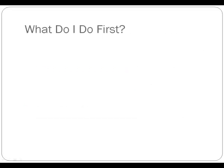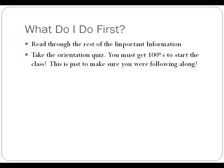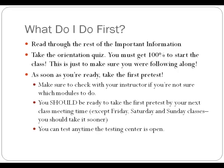So where do you go from here? The first thing is you're going to read through the rest of the important information — some of it's required and some of it isn't, but we recommend you read through all of it so you have a good idea of what to do in this class. The next thing is to take the orientation quiz. It's a very easy quiz, but you need to get all of them right to start the class. This quiz is just to make sure you didn't skip through and not watch any of this material — it's important that you understand how this class works.